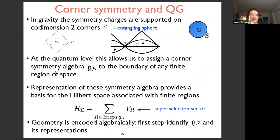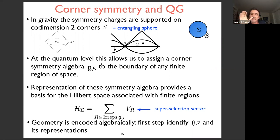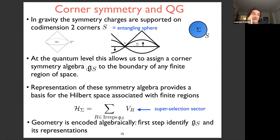The symmetries are included in one another: AdS/CFT has the smallest symmetry group — conformal symmetry — which is included in a form of BMS symmetry, and BMS symmetry is part of the extended corner symmetry group. In gravity, symmetry charges are supported on co-dimension two spheres. At the quantum level, this allows us to assign a corner symmetry algebra to each surface S, which we call G_S — the corner symmetry group assigned to every finite region of space.